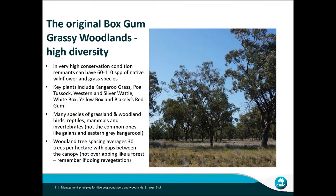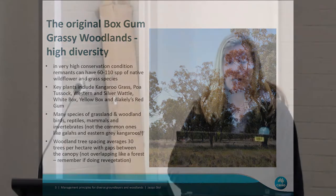Originally, the box gum grassy woodlands had very high diversity in very high conservation condition — getting up to between 60 and 110 species of native wildflowers and grass species. So more wildflowers than grasses! Incredible diversity of plants — kangaroo grass, poa tussock, the wattles, normally not more than about 10 percent. We've got white box, yellow box, and Blakely's red gum.